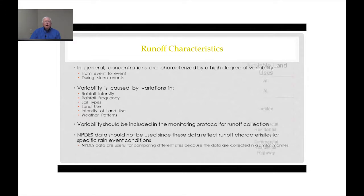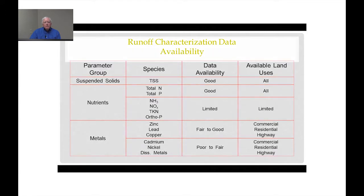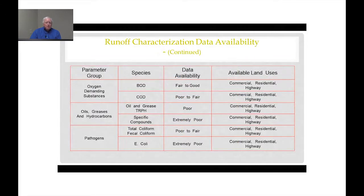When you look at runoff characterization data in the literature, you'll find a lot of data for suspended solids, for nutrients, and a fair amount of data for metals — but the metals tend to be mostly zinc, lead, and copper, and the land uses tend to be commercial, residential, and highway. When you get into the more exotic parameters such as BOD, COD, oil and grease, and particularly pathogens, data availability becomes much less, and many of these are infrequently measured in runoff studies.